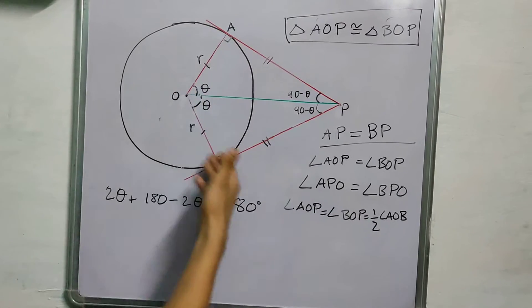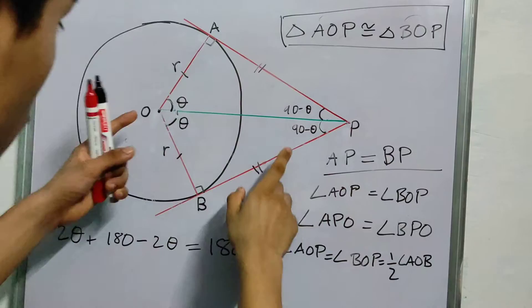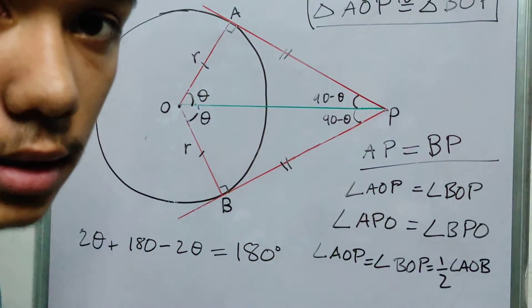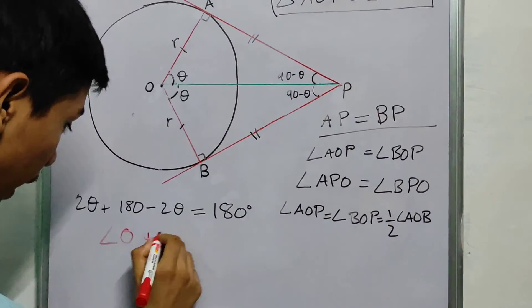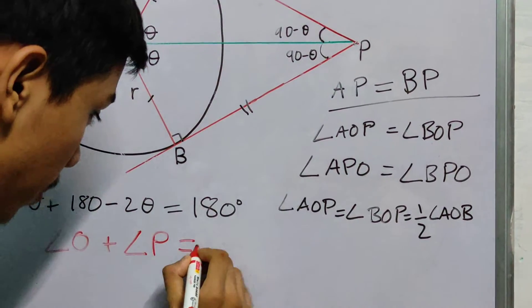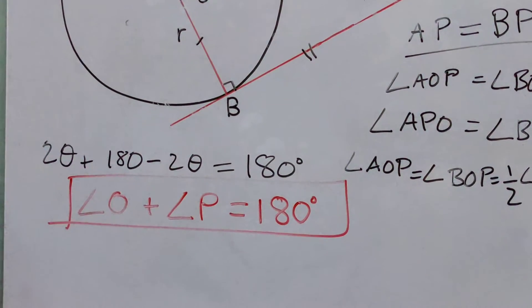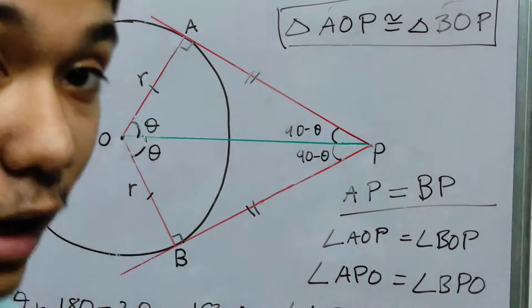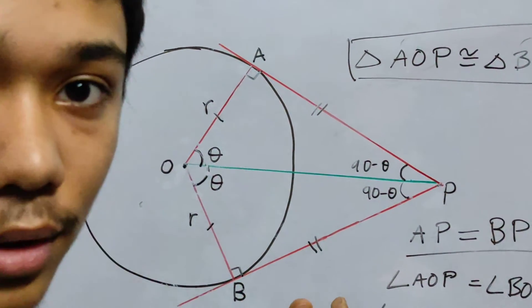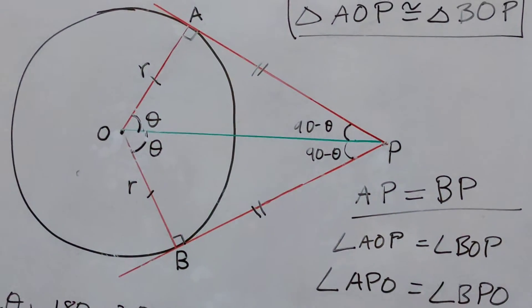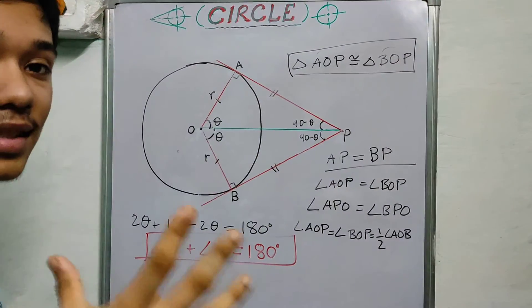What it means is you have a quadrilateral AOBP and these two angles, angle O and angle P are the opposite angles. That's a very important thing. These are opposite angles. So angle O and angle P, they both add up to 180 degrees. What does this tell you? This tells us that, if you remember your theorems on the cyclic quadrilateral correctly, the quadrilateral APBO is a cyclic quadrilateral. Interesting, right? You draw the tangents and you get a cyclic quadrilateral.